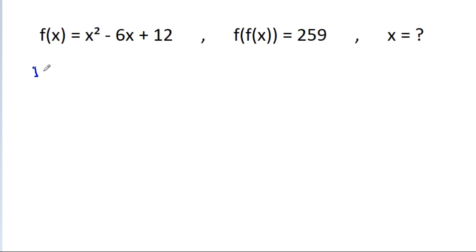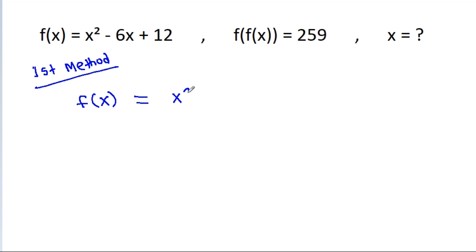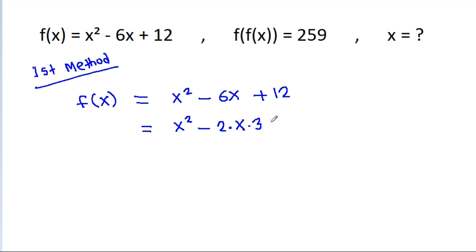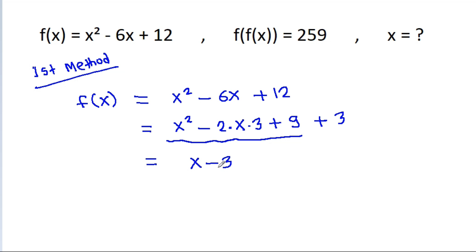So, the first method. We have f(x) equal to x squared minus 6x plus 2n. We rewrite x squared minus 6x as 2 times x times 3, and then add and subtract 9, giving us x squared minus 2 times x times 3 plus 9, which is x minus 3 squared, plus 3.